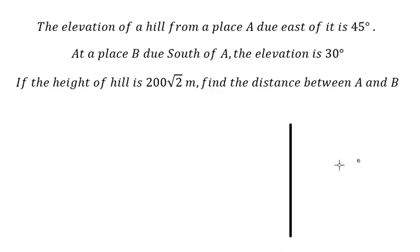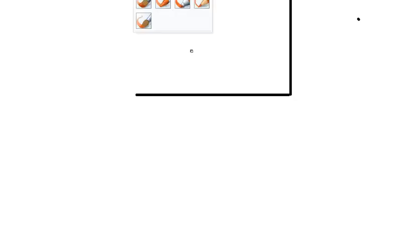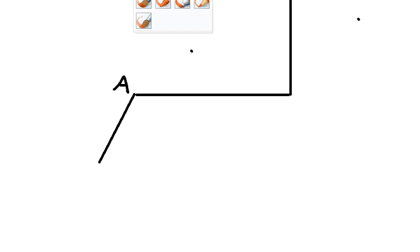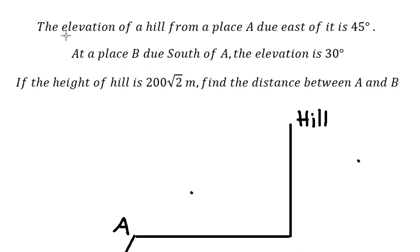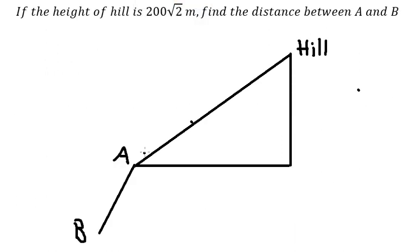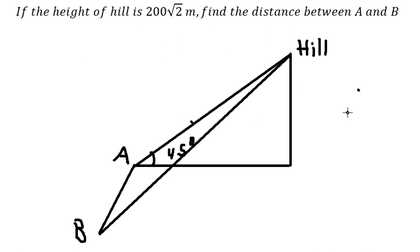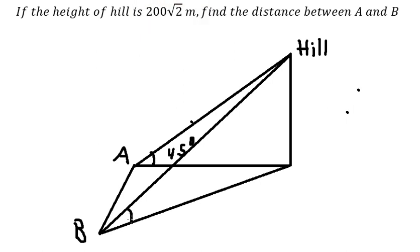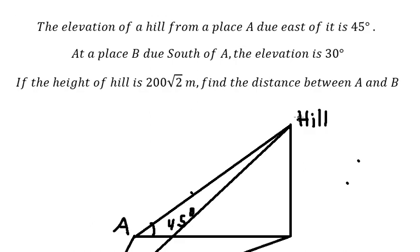We have the hill and we know that location A is due east — that is about this location here. The next one, place B is due south of A, so B should be here. From place A, the elevation angle to the hill is about 45 degrees. From B to the hill, this elevation is about 30 degrees. The height of the hill is this one.